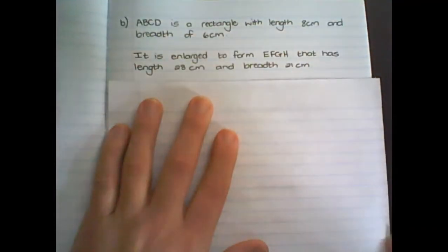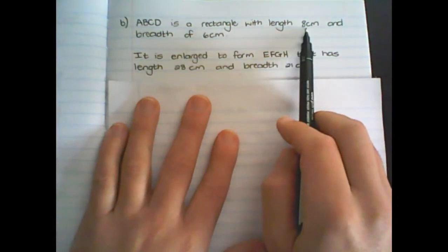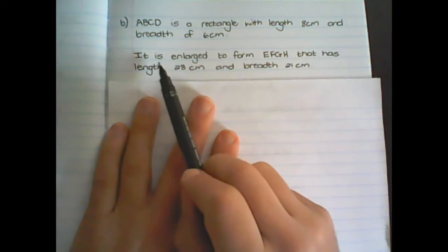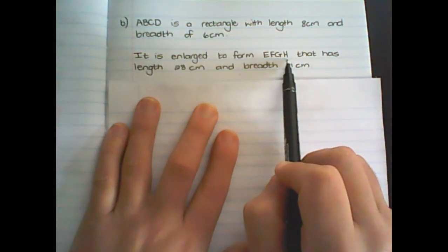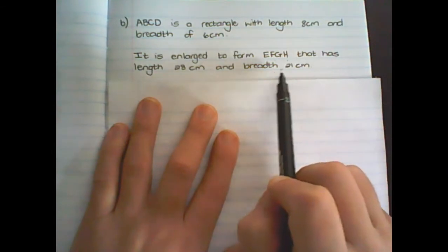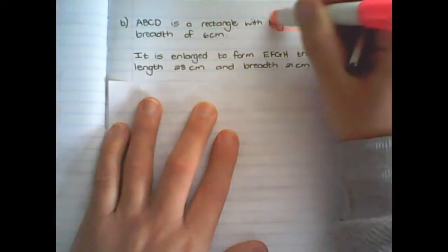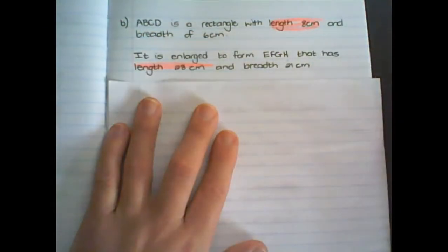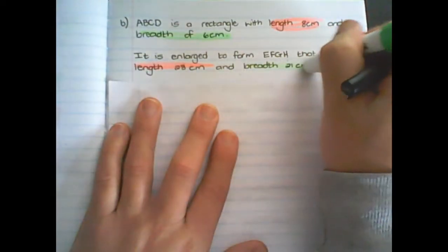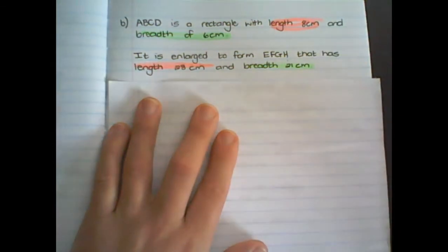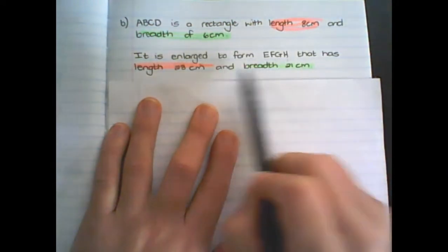Let us now work with an example without using any figures. ABCD is a rectangle with a length of eight centimeters and a breadth of six centimeters. It is enlarged to form EFGH, a new rectangle with a length of 28 centimeters and a breadth of 21 centimeters. So we can see that the figure ABCD was enlarged by comparing the length and breadth with each other.